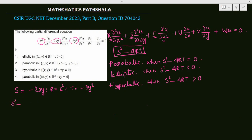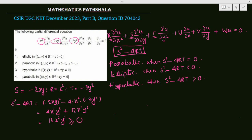Now let's calculate S² - 4RT. We have S² = (-2xy)² = 4x²y², and -4RT = -4·(x²)·(-3y²) = 12x²y². So S² - 4RT = 4x²y² + 12x²y² = 16x²y².